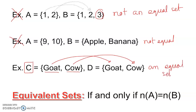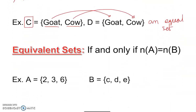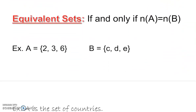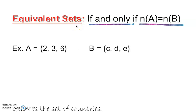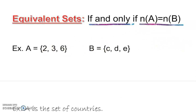Now let's talk about equivalent sets. The condition is 'if and only if': cardinality of set A equals cardinality of set B — then we call it an equivalent set. There is only one condition. For equal sets, there were two conditions: it has to be exact, and it has to have the same elements. For an equivalent set, only one condition must be satisfied — the cardinality must be the same.